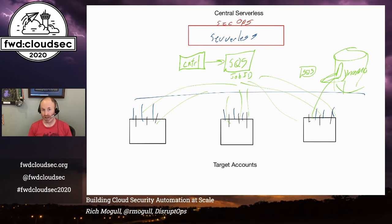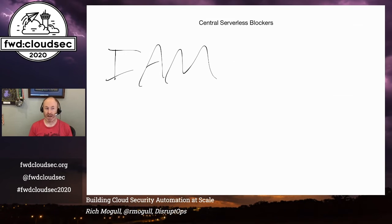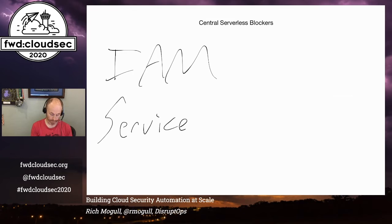You can do the exact same thing for remediation. On the remediation side, you drop the message into the queue and centrally it makes the changes in those environments. The big challenge on all of this is IAM, and then the other one is going to be service limits. These are the two things that really challenge this approach, along with more complexity because you've got to maintain a lot of this stuff in parallel.